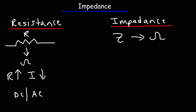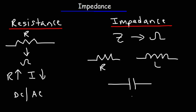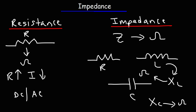The elements that impede the flow of AC current include the resistor, inductors, and capacitors. The opposition that a capacitor provides to the flow of AC current is known as capacitive reactance. The opposition of an inductor towards AC current is known as inductive reactance. Both capacitive reactance and inductive reactance are measured in ohms.